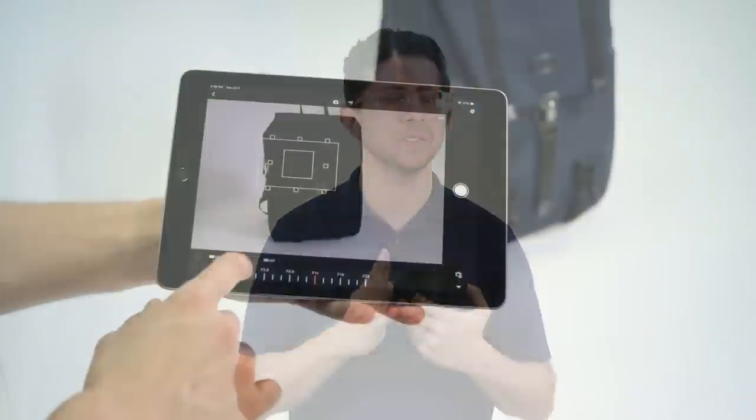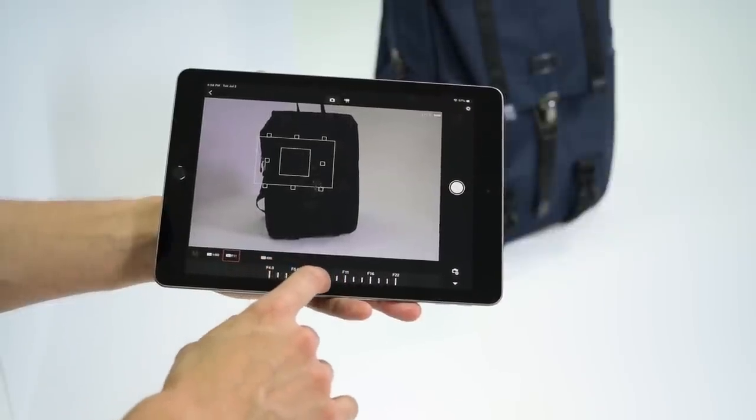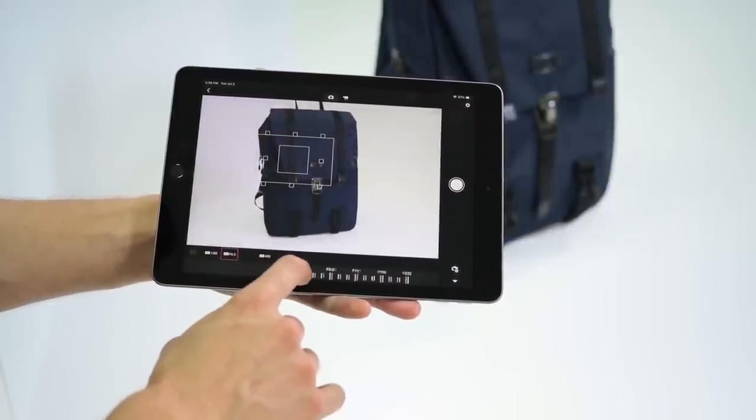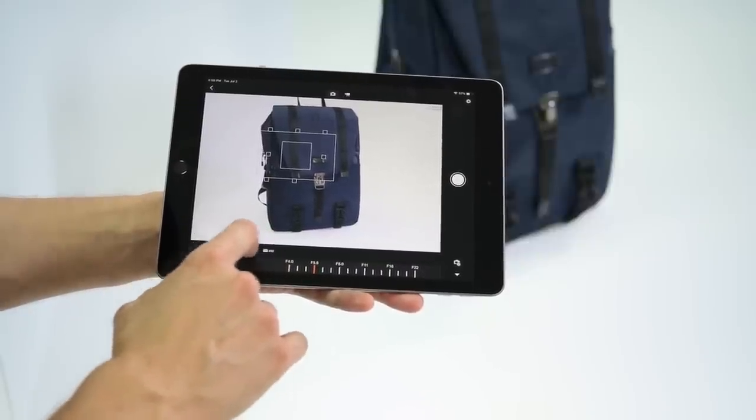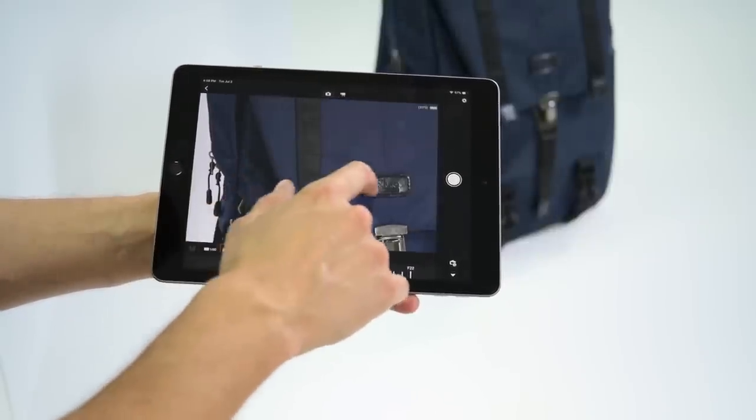But the remote live shooting of the Canon Connect app is so much better. You get full control over the camera. You can change your shutter speed, your aperture, your ISO. You can touch the focus right from your tablet or your cell phone.